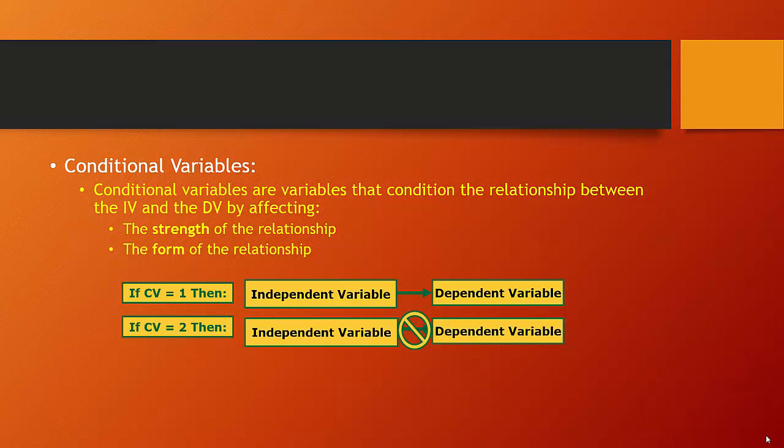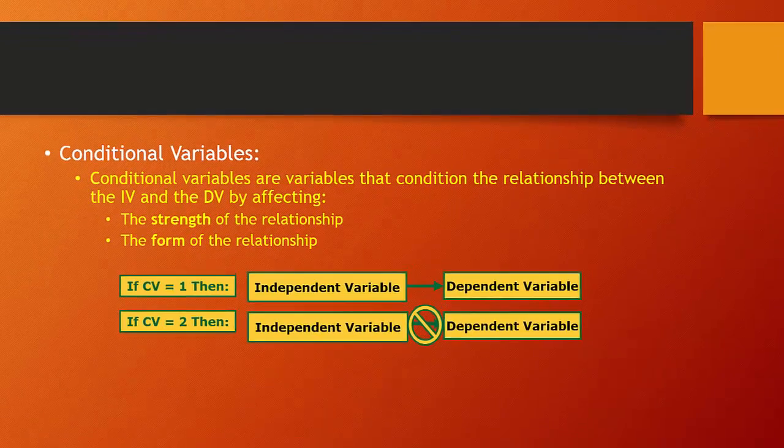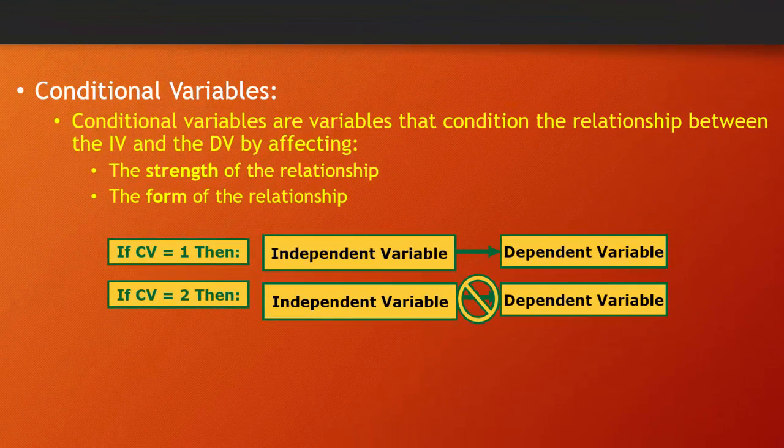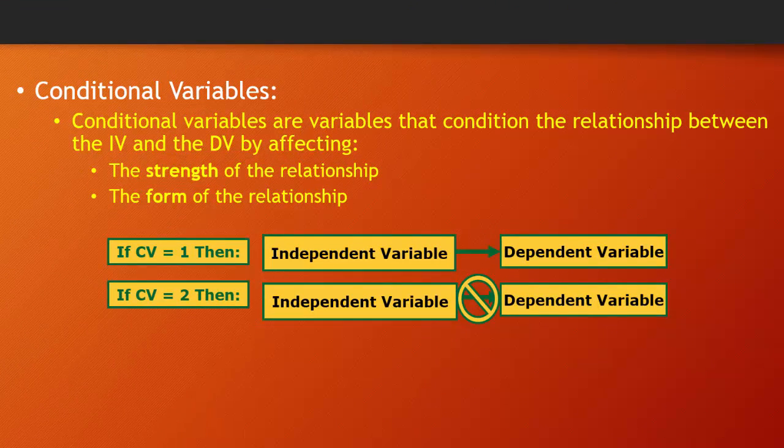But once we've identified intervening variables, perhaps we want to think about what's called a conditional variable. So we've eliminated plausible sources of spuriousness. We've verified the assumed causal mechanism. And let's think about the conditions under which our hypothesized relationship holds. This might help us elaborate our theory. So ideally, we want there to be as few conditions as possible because the aim is to come up with a generalization. But nevertheless, we might want to consider some conditions if we think that they're important to elaborate our theory.